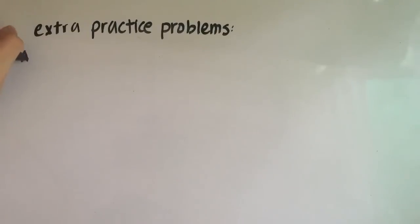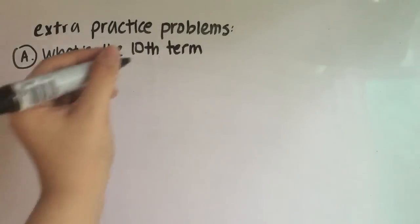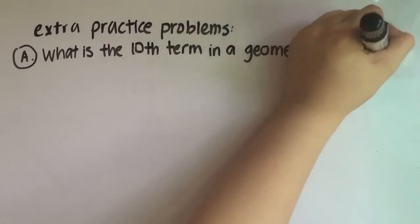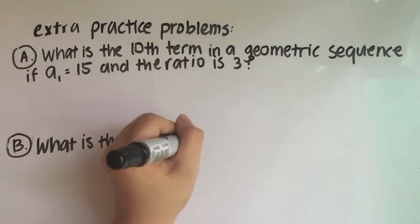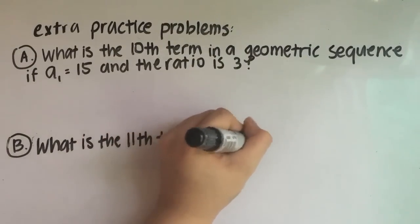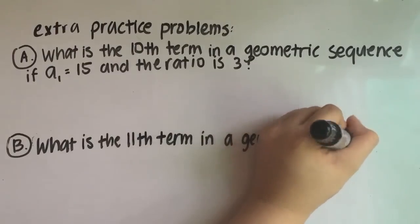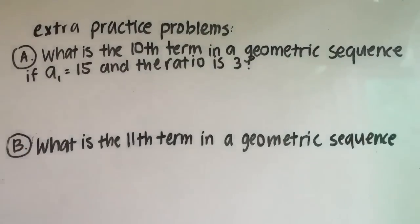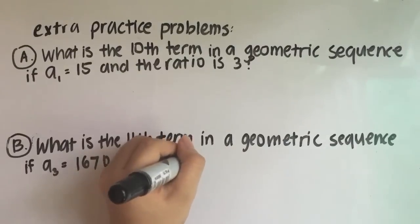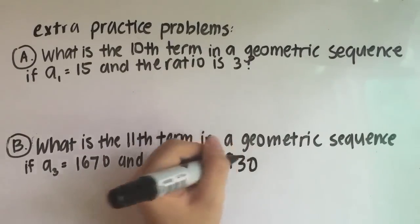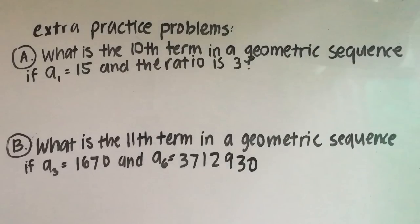We are now going to leave you with practice problems. The first one is: what is the 10th term in a geometric sequence if a sub 1 is equal to 15 and the common ratio is 3? The second problem is: what is the 11th term in a geometric sequence if a sub 3 is equal to 1,670 and a sub 6 is equal to 3,712,903?